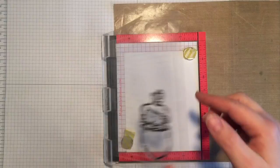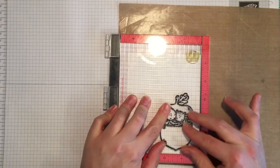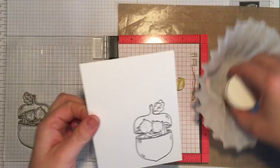And when I lift the door I have a good impression so I'm going to take that out, cover it with clear embossing powder and then heat set it.